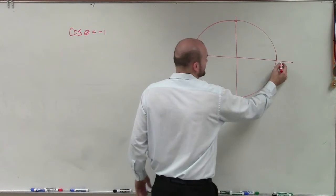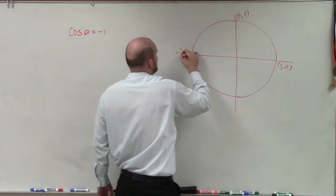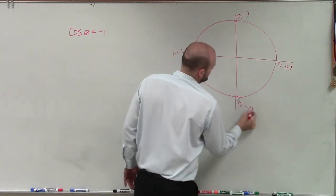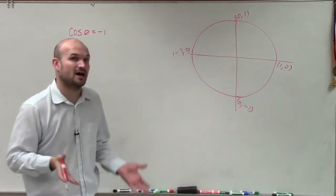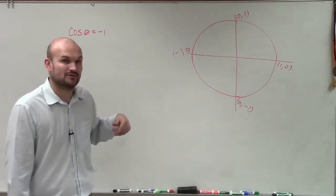If I look at my unit circle, we know we have these kind of major points here: 1 comma 0, 0 comma 1, negative 1 comma 0, and 0 comma negative 1. We're looking for that x-coordinate that's going to equal negative 1.